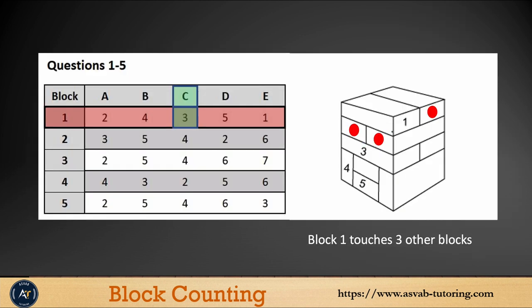The first question, how many other blocks touches with block number one? Easy way you could do it: Always look at the block straight, then look at the number straight. Then you could see there is no block in the front and also in the back. So we need to consider left, right, up and down. You could see here in the right side, you have only one. There is no in the left side. There is no on the top. On the bottom, you have one, two. There are total three blocks touching block number one. Block one touches three other blocks. The correct answer is C, three.